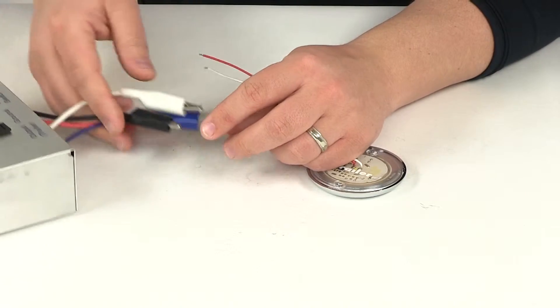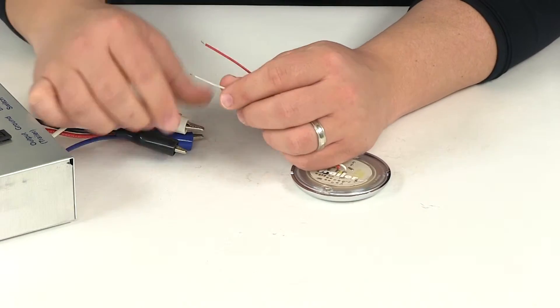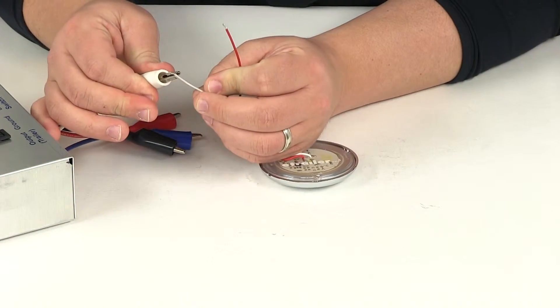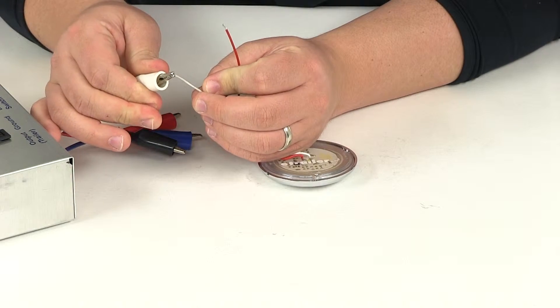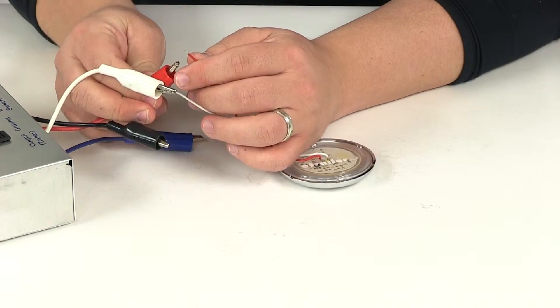I want to go ahead and hook this up to our external power source. That way you can see what it looks like with power running to it and with our overhead lights turned off. We'll make our ground connection and then our power connection.